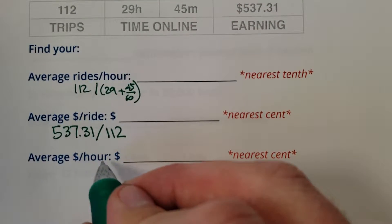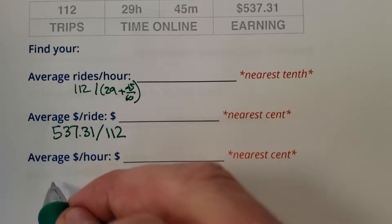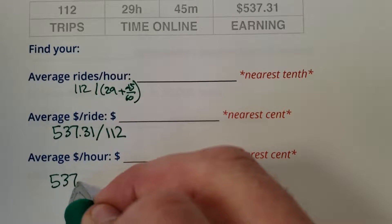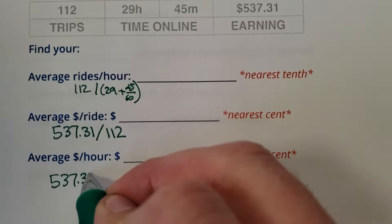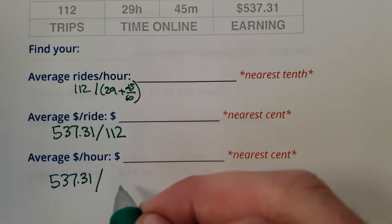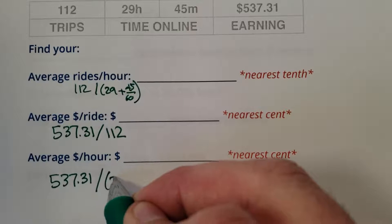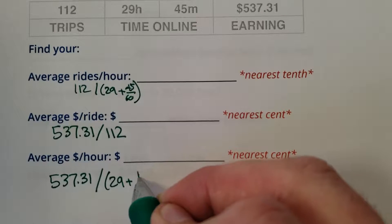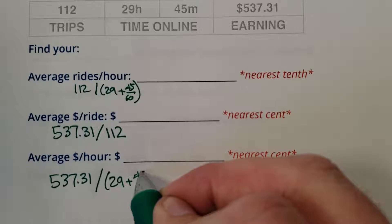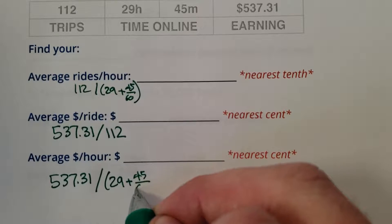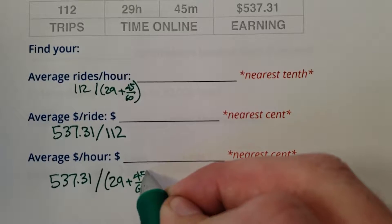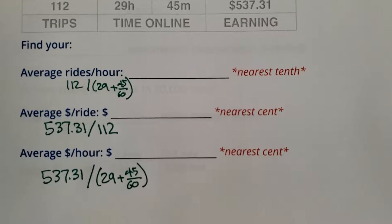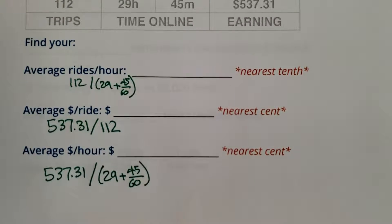And then the dollars per hour, you would go $537.31 divided by — again — bracket 29 hours and 45 minutes of a 60-minute hour. Alright, we got it all written out. Let's do the math.